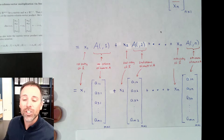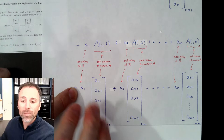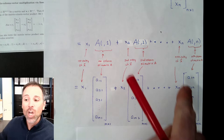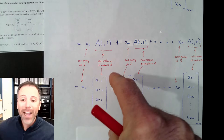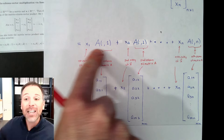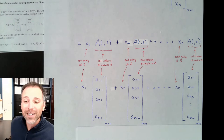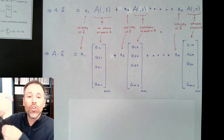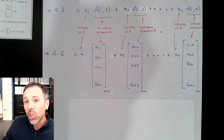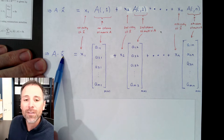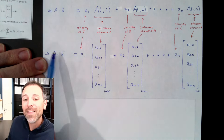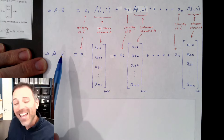When we think about A times x, we're thinking about the fundamental unit of data as vectors — we're operating on the column vectors of A via a linear combination where the scalars are defined by the individual entries of x. Why must the inner dimensions agree? Because A times x is a linear combination of the columns of A, every column must be paired with a scalar from x, so the number of entries of x must match the number of columns of A.